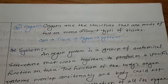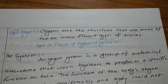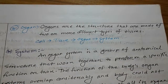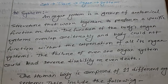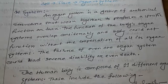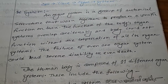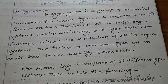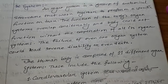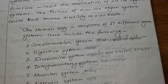Now, organ. Organs are structures made of two or more different types of tissue. Some cells make tissue, some tissue makes organs, and some organs make systems. Our body processes systems. An organ system is a group of anatomical structures that work together to perform a specific function. The functions of the body's organ systems overlap considerably, and the body could not function without the cooperation of all its organ systems. The failure of even one organ system could lead to severe disability or even death. The human body is composed of 11 different organ systems.